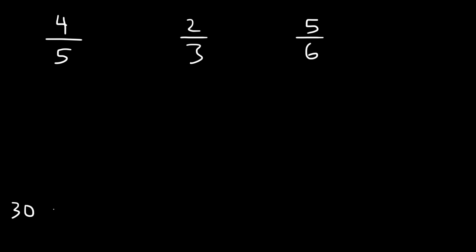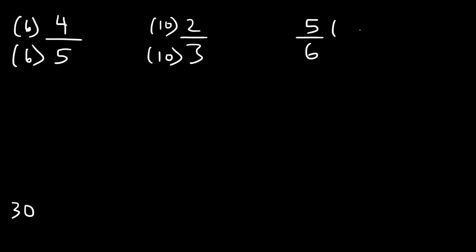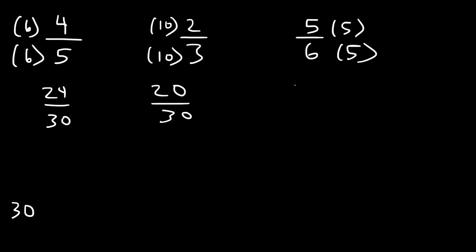If you divide 30 by 5 you get 6, and if you divide 30 by 3 you get 10. So to get a denominator of 30, multiply the first fraction by 6 over 6 (since 5 times 6 is 30), the second fraction by 10 over 10 (since 10 times 3 is 30), and the last one by 5 over 5 (since 6 times 5 is 30). That gives us: 6 times 4 is 24, 10 times 2 is 20, and 5 times 5 is 25.